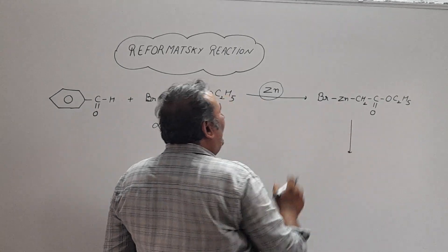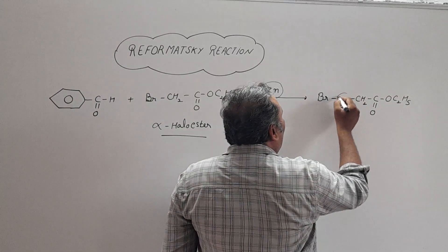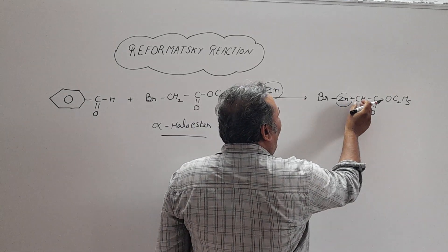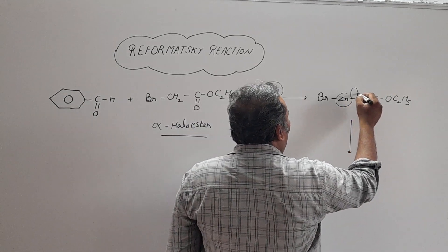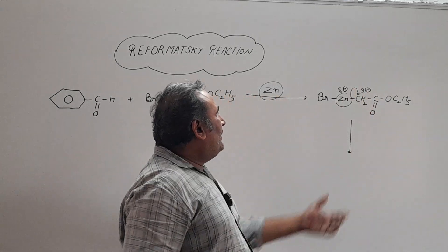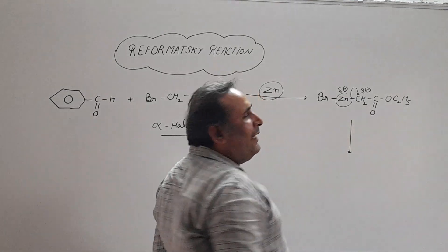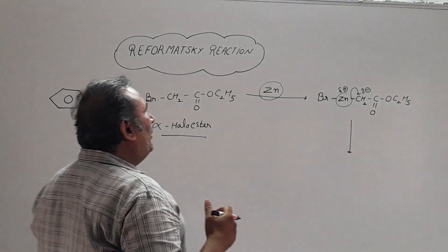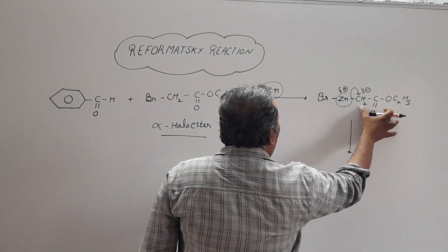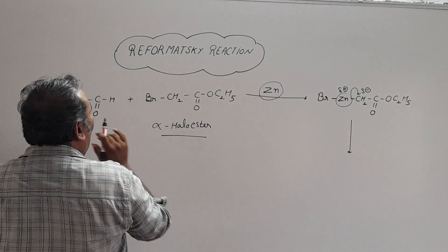Due to this organometallic compound, the zinc is very electropositive. That's why the alpha-carbon will acquire a negative charge. So this whole entity will act as a good nucleophile, and this nucleophile will attack on the carbonyl compound.